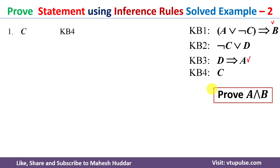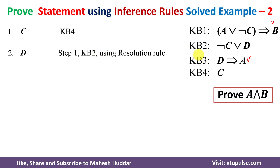First, we take the fourth knowledge base, which is C. Then I will apply a unit resolution operation between knowledge base 2 and this first step. Knowledge base 2 says ¬C ∨ D, and we have C from step one. Since C and ¬C are present, the result is D. That is the meaning of the unit resolution rule.